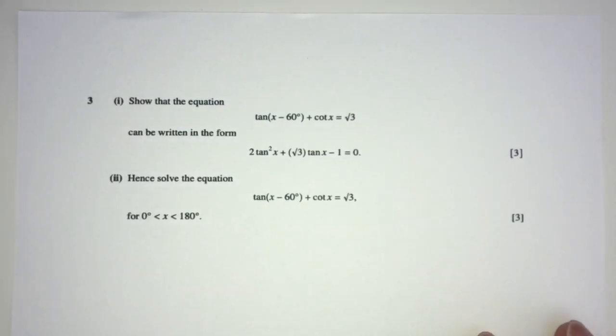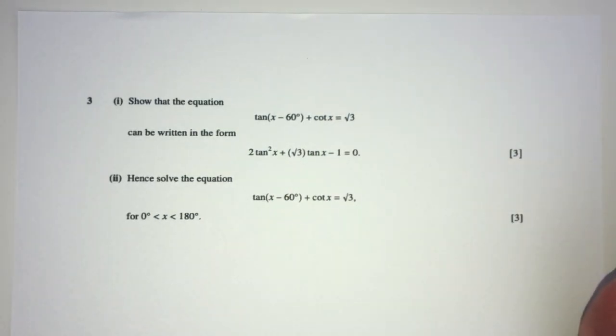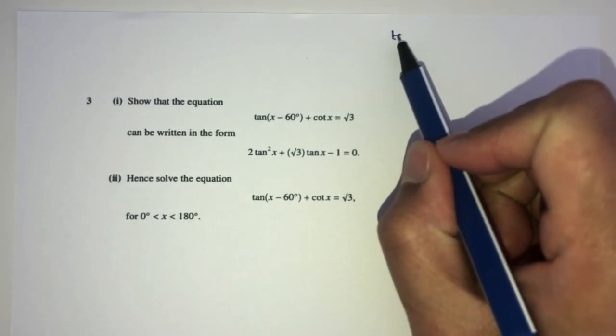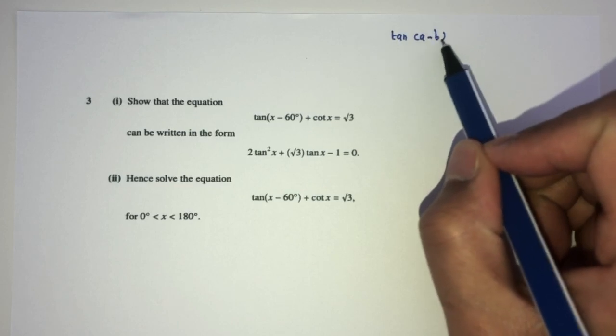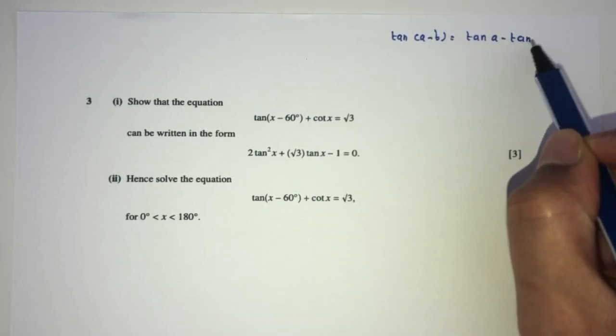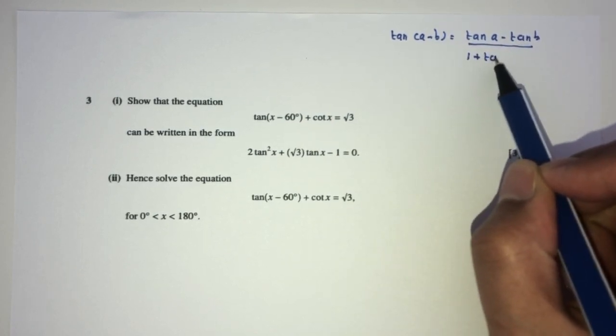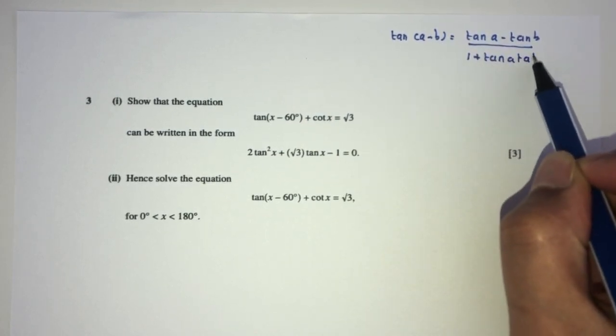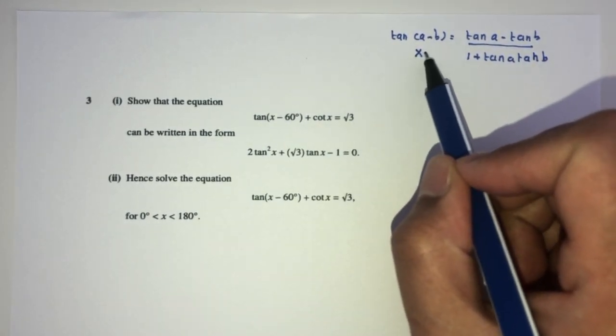Now let's move on to question number 3. Here we have to show this equation become this one. What do we use? We use a formula for tan, as we should know. For example, we should know tan of a plus b, or a minus b here, is equal to tan of a minus tan of b divided by 1 plus tan a times tan b. So similarly, we replace the value of a by x and b by 60.